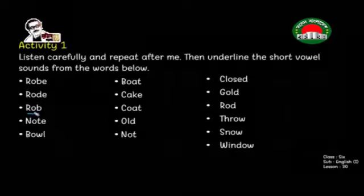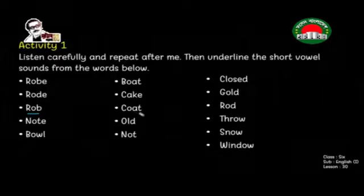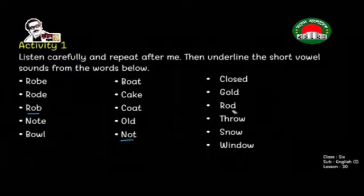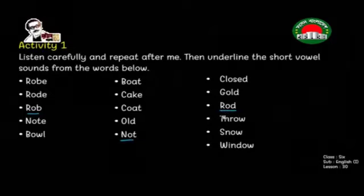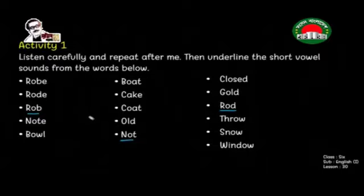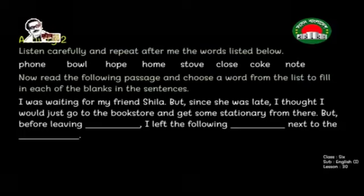Other words: coat — no, old — no. What about 'not'? Exactly — only one vowel O, so it is a short vowel. 'Rod' — exactly, that is the short vowel. 'Throw', 'snow', 'window' — they are long vowels. So we get only three words as short vowel sound: rub, not, rod.